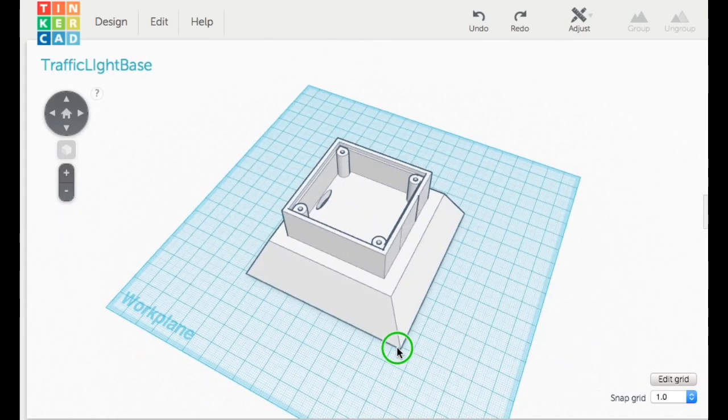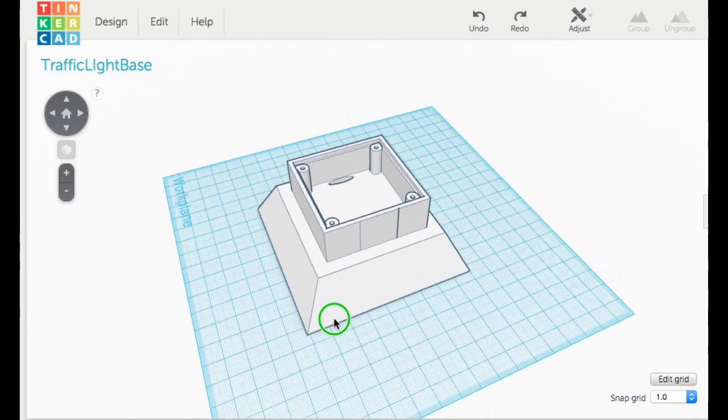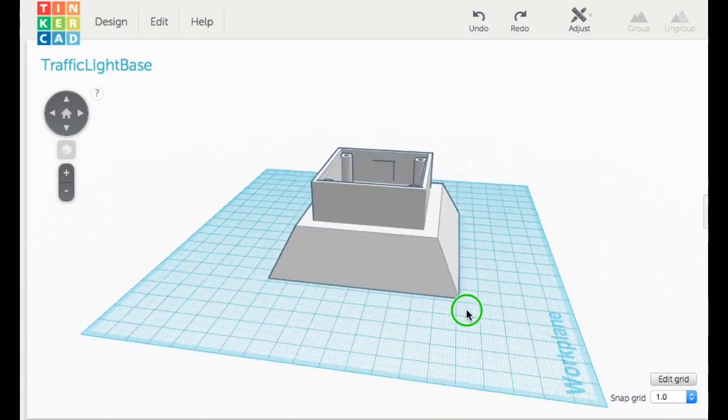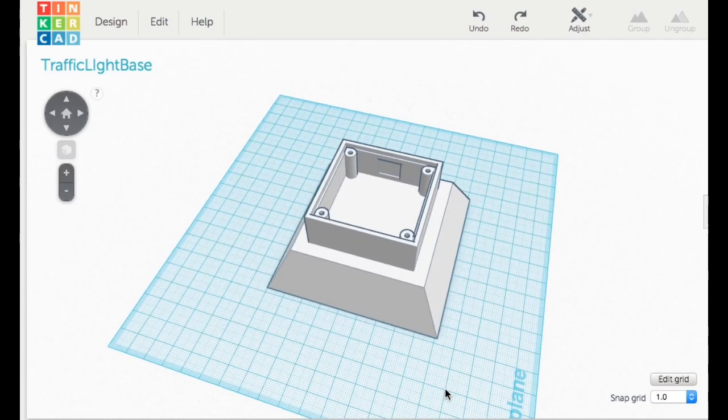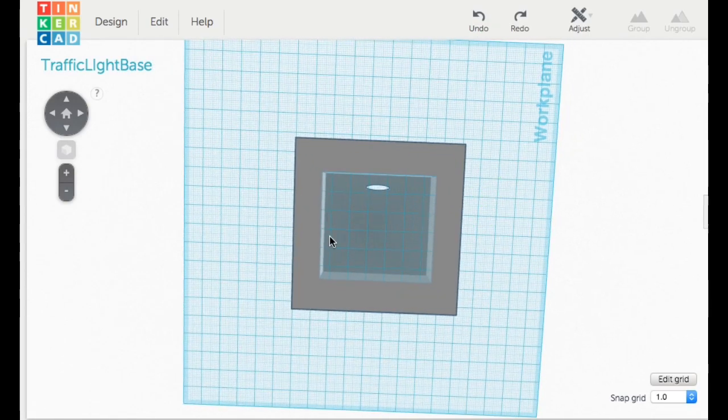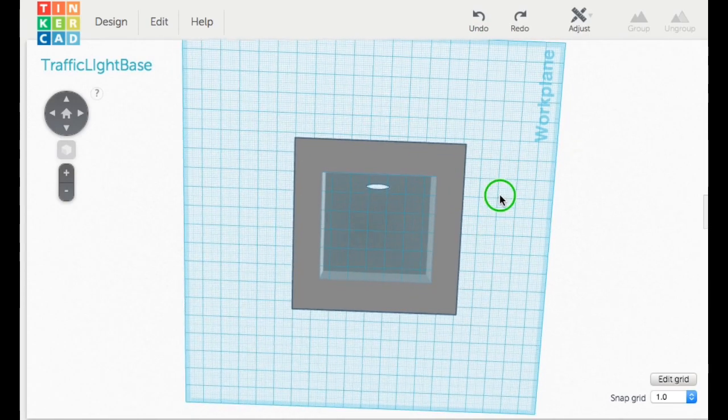So I made a triangular base, and cut off the top of it, so it was flat. Then I imported that original base, and put it right on top of it. And then I hollowed out the bottom of this thing, to make room for the battery case, and made a little hole for the wires to pop through.